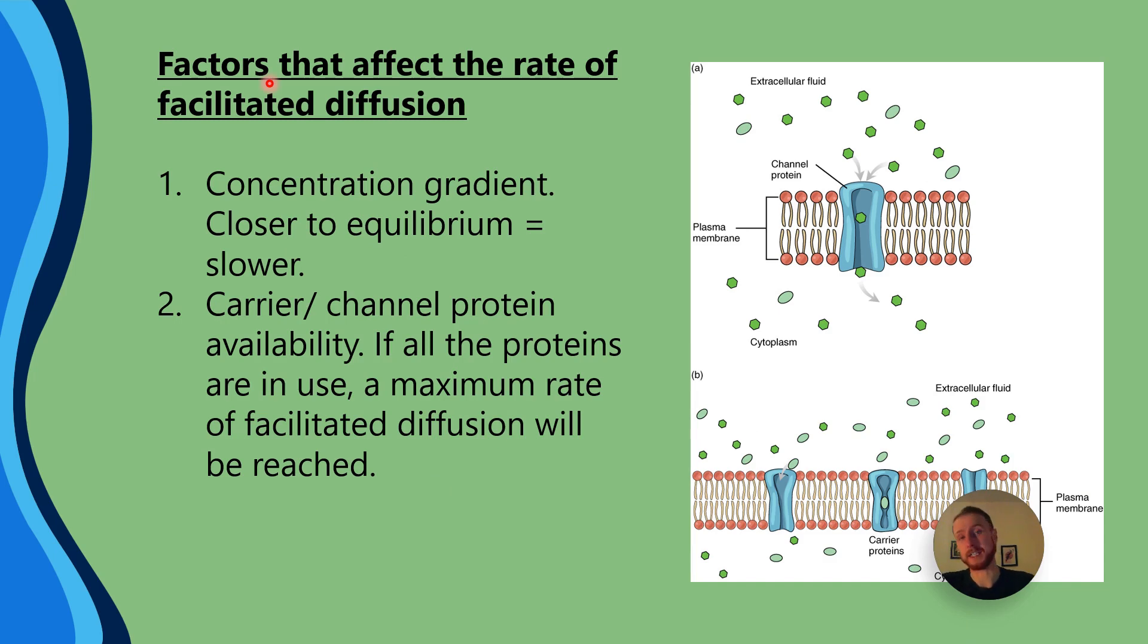Now, factors that affect the rate of facilitated diffusion include the concentration gradient. So, the higher the concentration gradient, the faster the rate of facilitated diffusion can occur. And we can see in this diagram here that we've got a nice high concentration in the extracellular fluid and a low concentration in the cytoplasm. So, these molecules, which look a little bit like glucose, I would say, because they're hexagonal, they're going to move from the extracellular fluid through the protein channel into the cytoplasm. Now, it can go either way. It depends on the needs of the cell and what the concentration gradient may be.